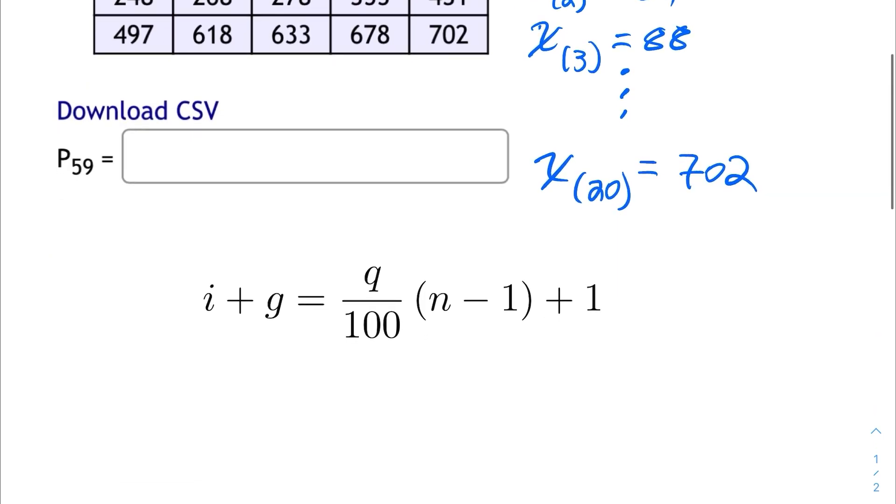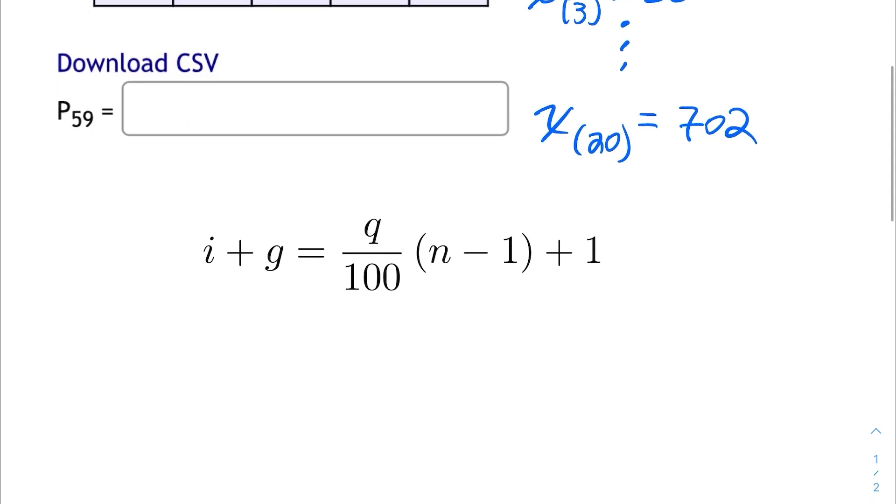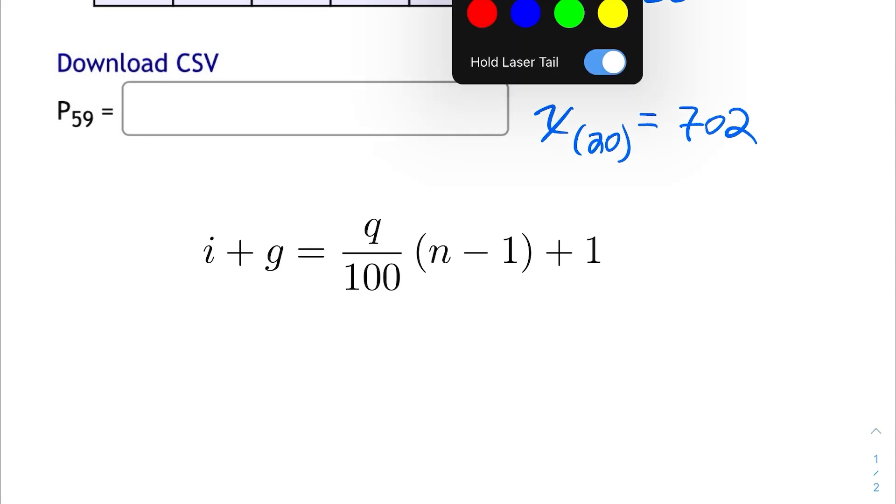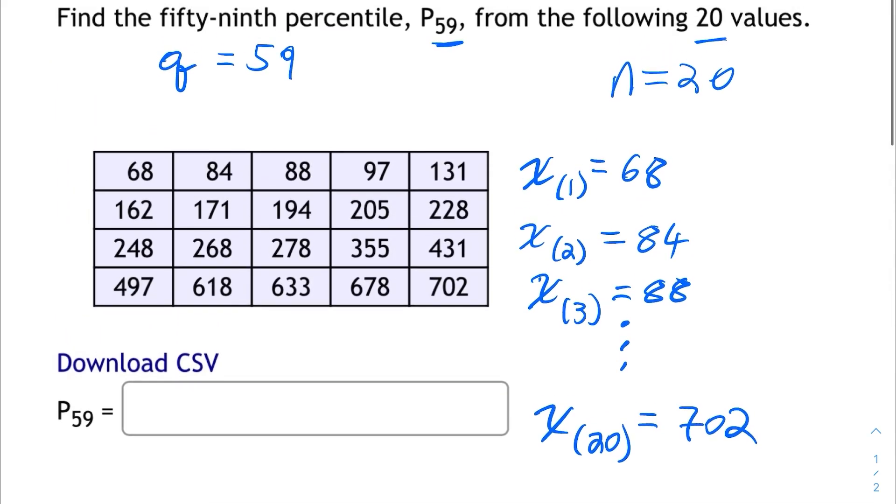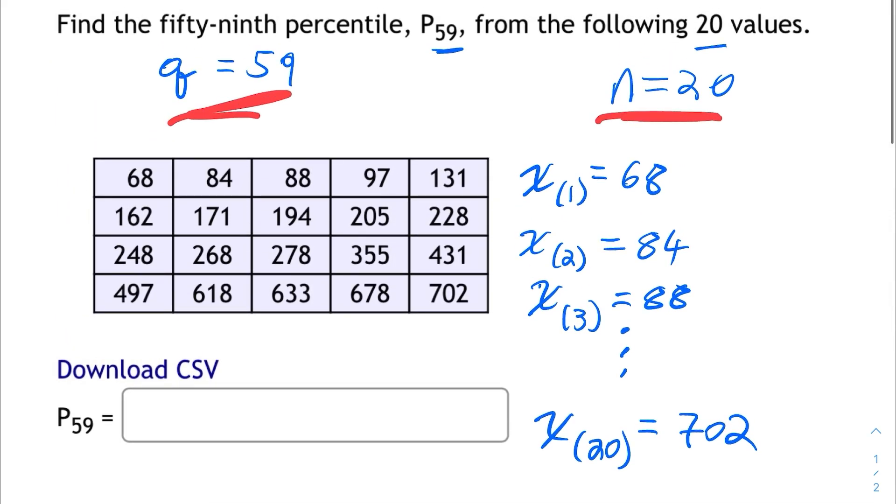To use that linear interpolation method, I'm using this formula here to find a virtual index called i plus g. This virtual index has two parts: i, which is the floor or the whole number, and g, which is the fractional part. So, to calculate i plus g, I just need to know q, which is the percentile percentage, 59, and n, which is the number of values, which is 20. We recorded those earlier, 59 and 20.